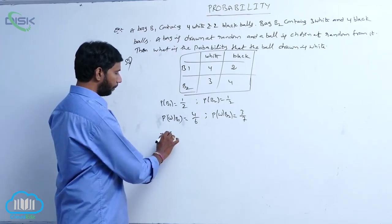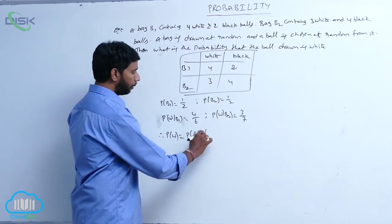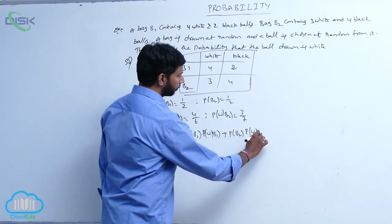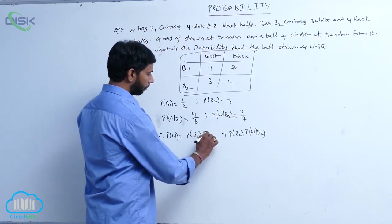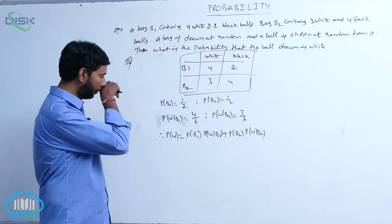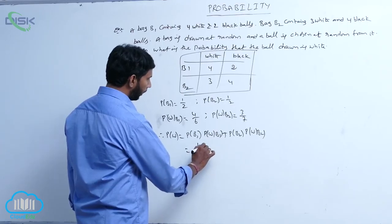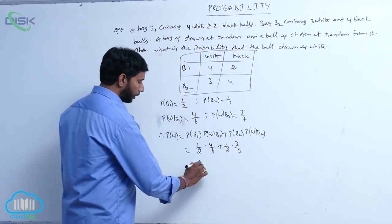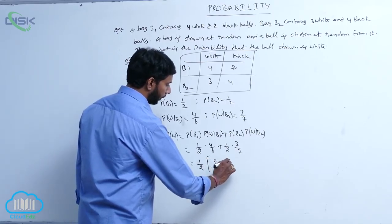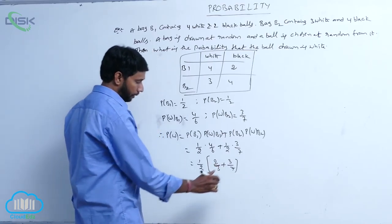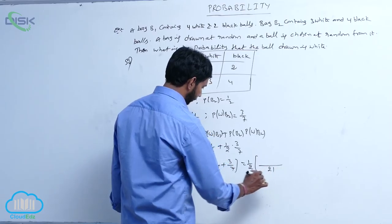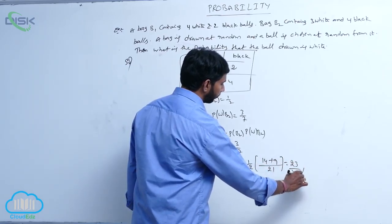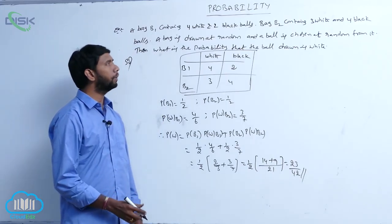Therefore, the probability of drawing a white ball equals P(B1) × P(W|B1) + P(B2) × P(W|B2), which gives 1/2 × 4/6 + 1/2 × 3/7. Taking 1/2 as common, we get 1/2 of (2/3 + 3/7). The LCM is 21, giving 1/2 × (14/21 + 9/21) = 1/2 × 23/21 = 23/42. The probability for the white ball is 23/42.